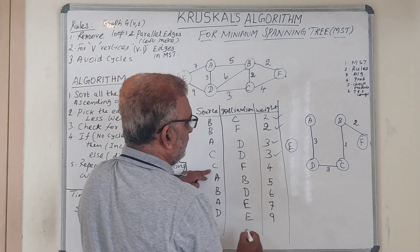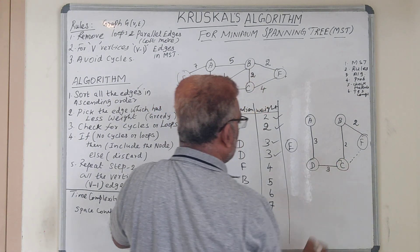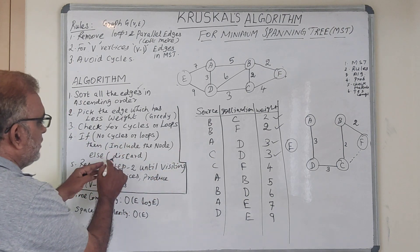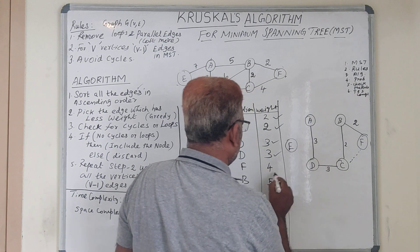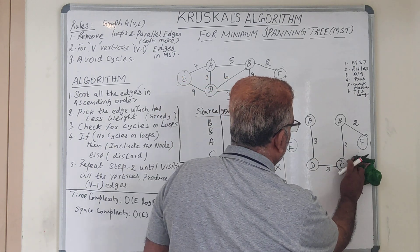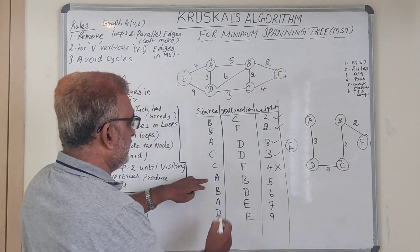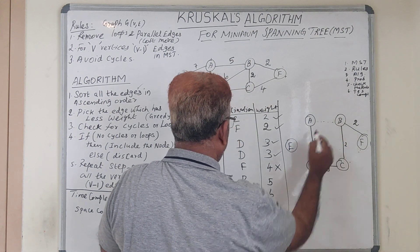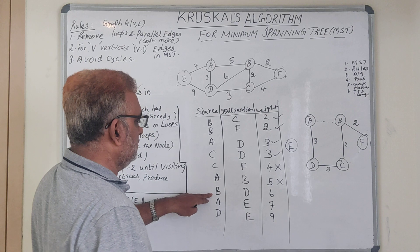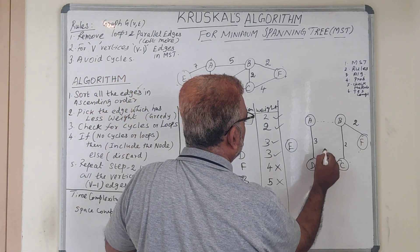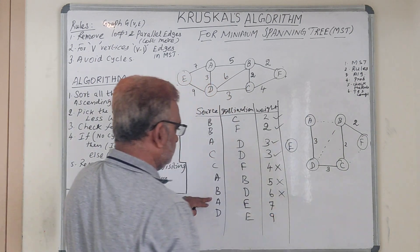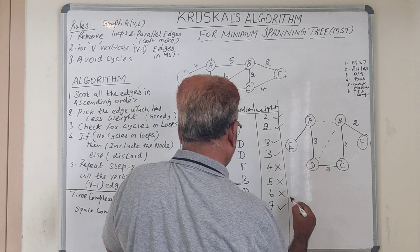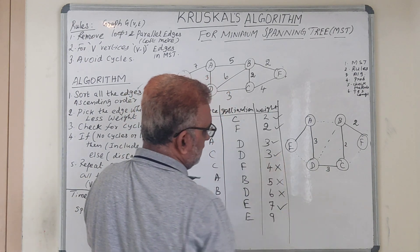Next is c-to-f with weight four. If we include this edge it forms a cycle, so it is discarded. Then a-to-b: including it also forms a cycle — discarded. Then b-to-d: again forms a cycle — discarded. Then a-to-e: this does not form a cycle, so it is included. Then d-to-e: it forms a cycle — discarded.